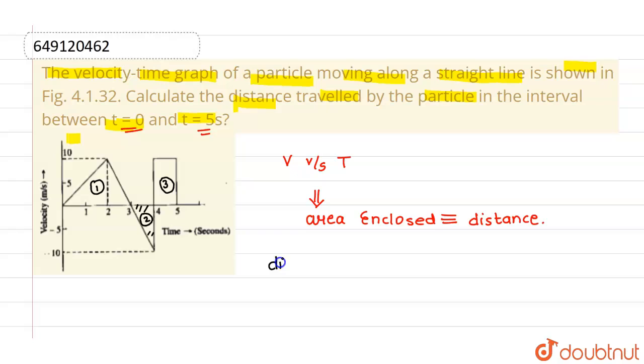So the net distance will be given by area of first figure. Since this is a triangle, so its area will be half into base which is 3 units into height which is 10 units, minus area of the second figure which is half into base is 1 and height is again 10.